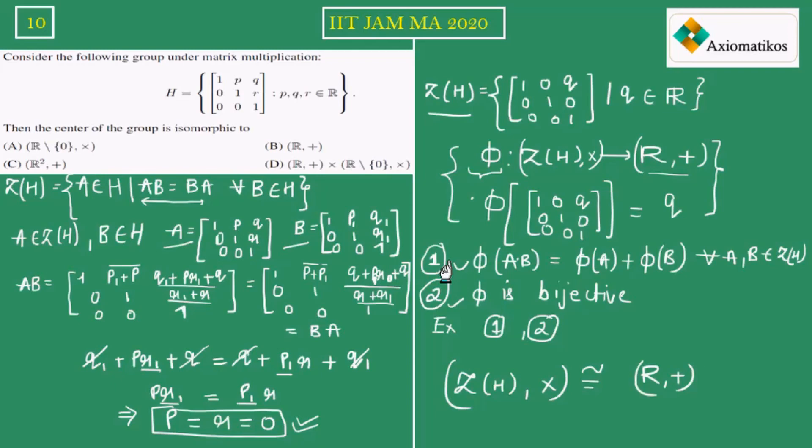This is how we should proceed in the exam. It is a slightly long question because you need to verify the isomorphism. But if you are familiar with this type of group — this is a particular group in group theory known as the Heisenberg group — and if you have studied group theory thoroughly, you can do this question directly. Otherwise, you have to calculate everything. Group theory requires remembering many statements and examples, but by just doing the calculation you can always arrive at your solution. Thank you.